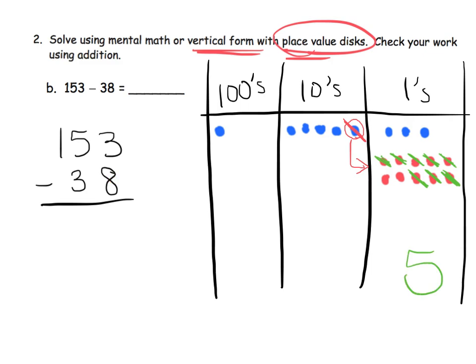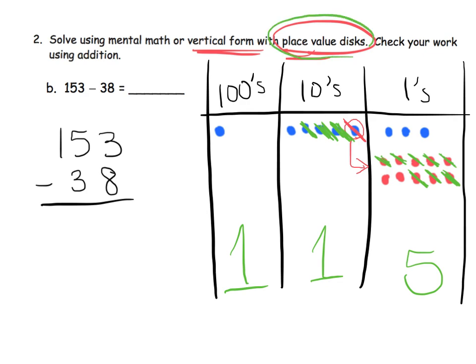Now we have 4 in the tens column, so we have 40, and it says we're supposed to take away 30. We could do that straight up — we just take away 3 of those dots, which leaves us with 1 dot in the tens column. And then in the problem, it says you have 1 in the hundreds, and there are no hundreds to take away, which leaves us with 1 in the hundreds. So the answer is 115.